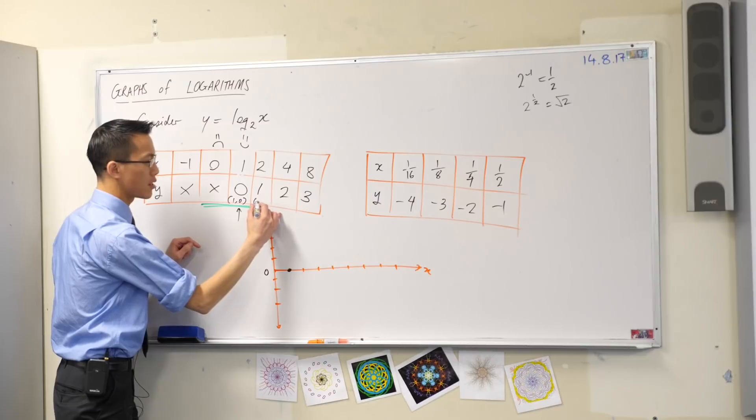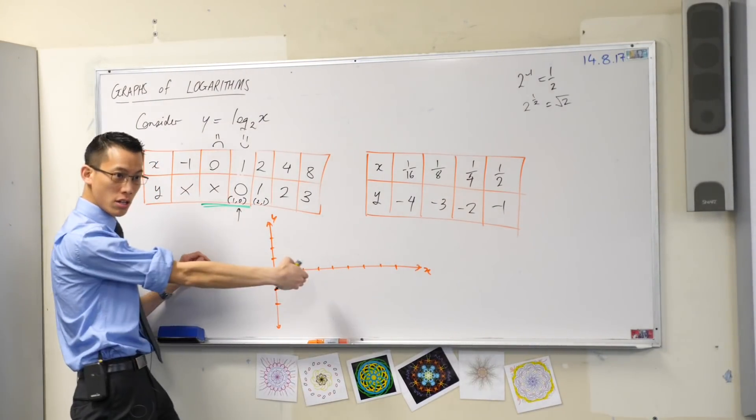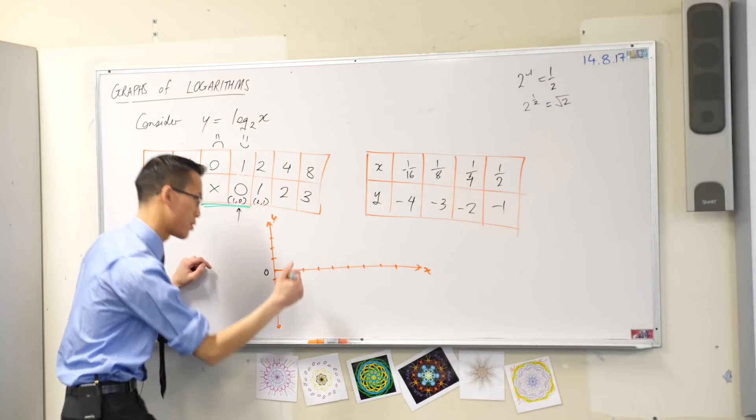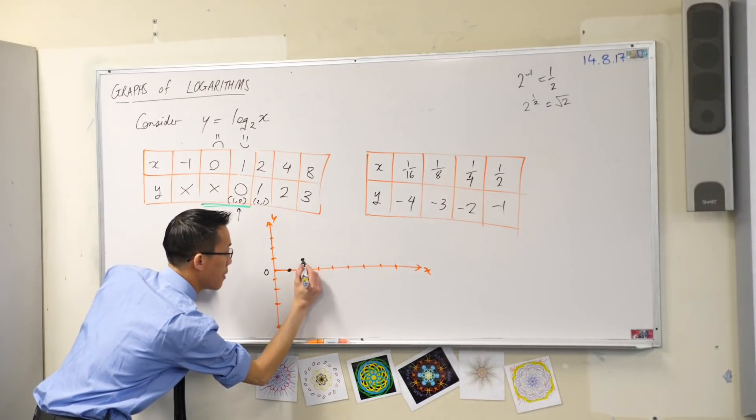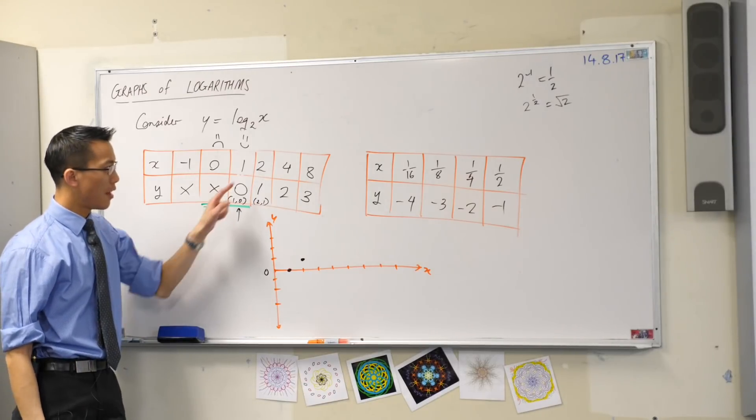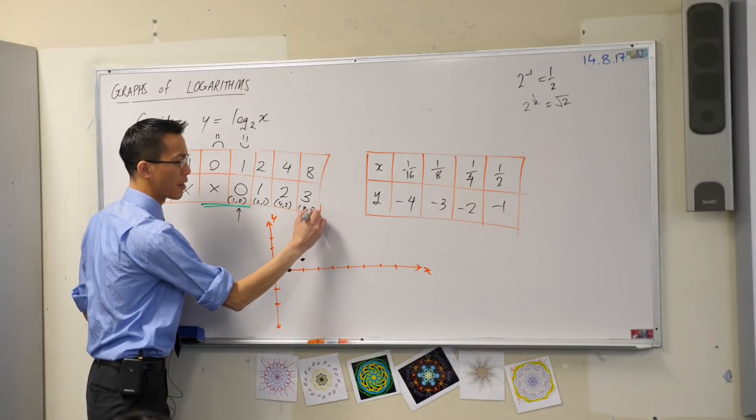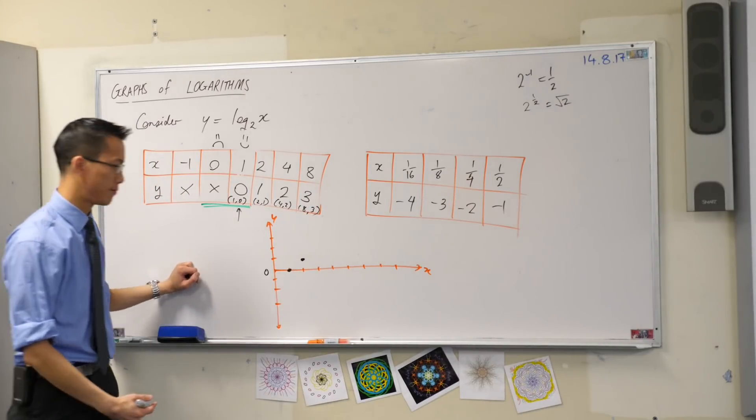This next one is two comma one. So I'm going to go across two units and up one. So on my graph, that looks like about there. The next one is four comma two. The one after that is eight comma three. Go ahead and draw those in.